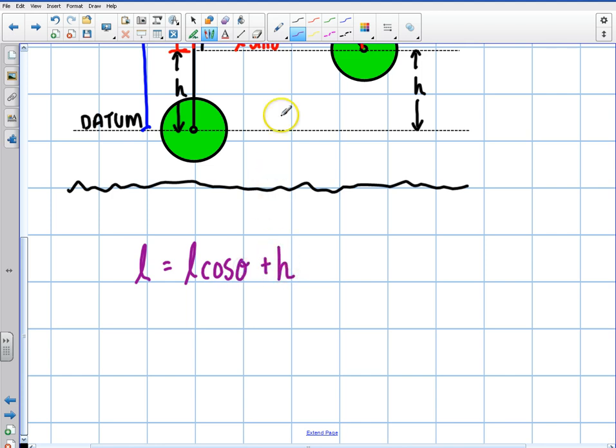So what am I interested in looking for? Remember, whatever we're looking for in an equation, I always want you to circle that. So I'm looking for the height here. That's what I'm looking for. So I'm going to solve this equation in terms of the height. So the height is going to equal L minus L cosine theta. And then what we can do is we can factor out an L and we can say that the height equals L times 1 minus cosine theta.